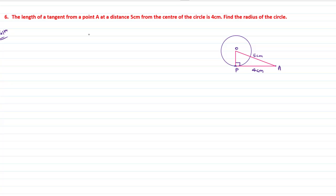Write down the given thing. OP is equal to, it is radius of the circle. OA is equals to 5 cm. AP is equals to 4 cm.